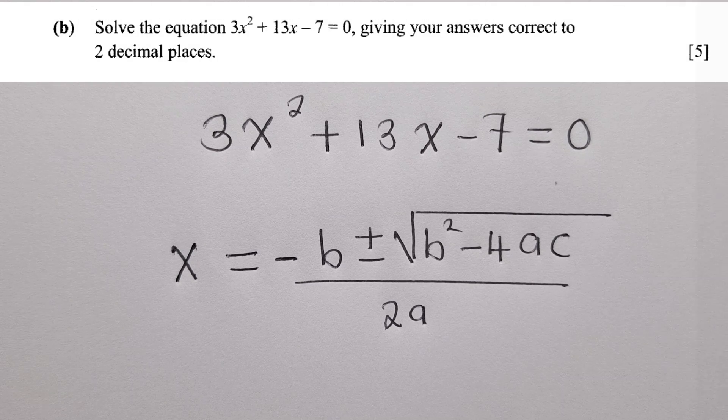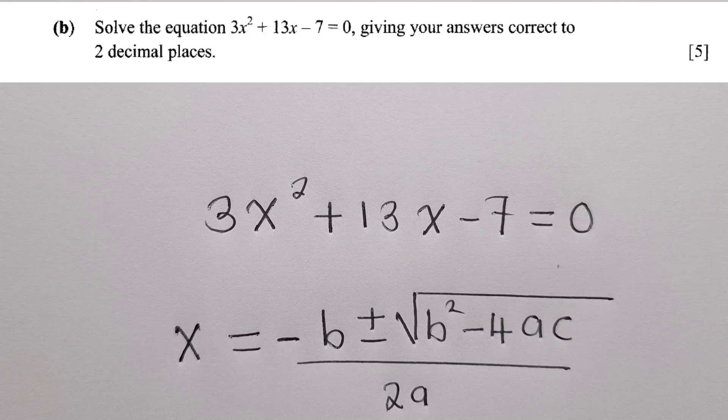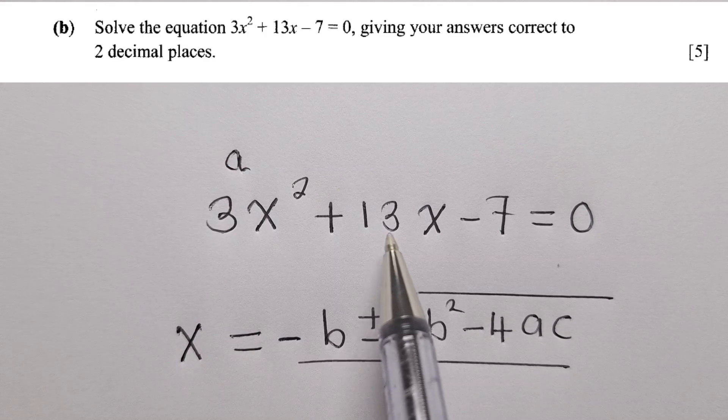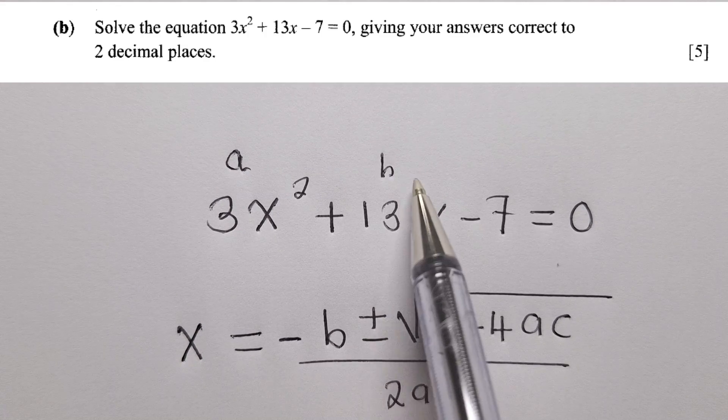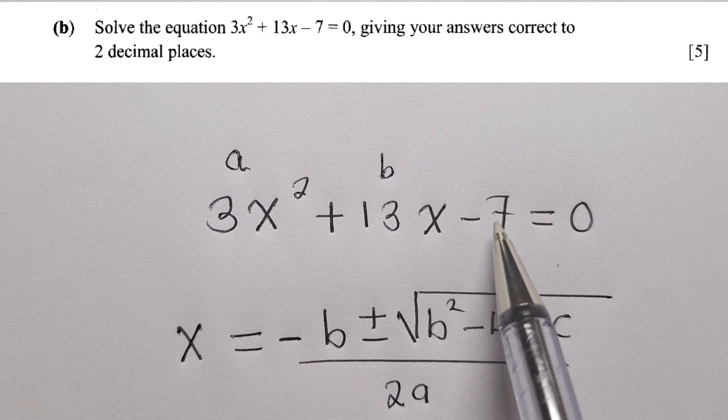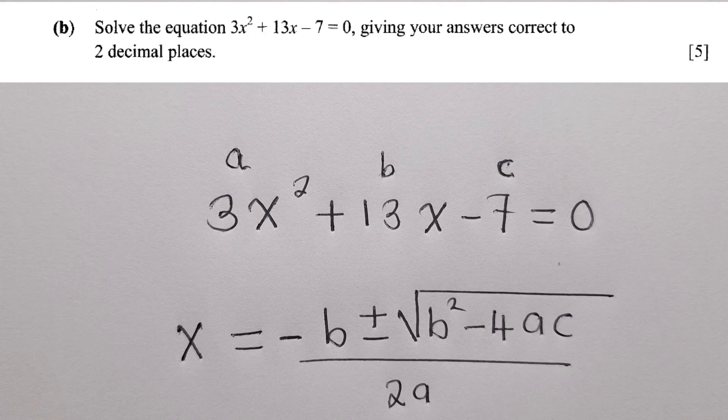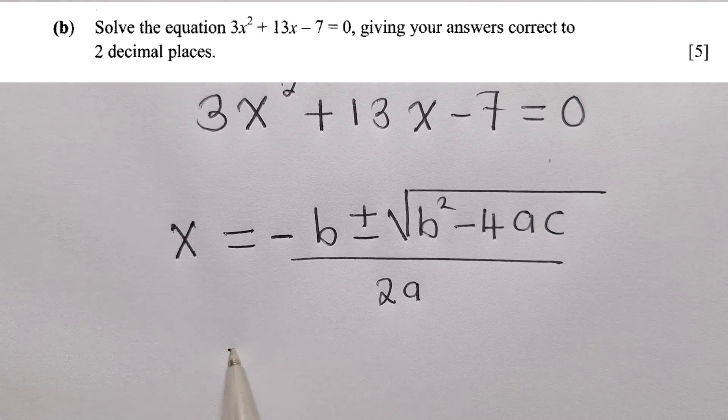So now, when we identify the formula, we come to what we've been given. Always where there is a power 2, this is our a. Where there is just x here, this is our b. Where there is a number without a letter, that is our c. So we know our a, b, and c. Therefore, we substitute.